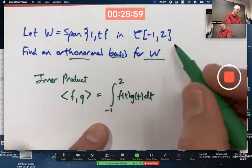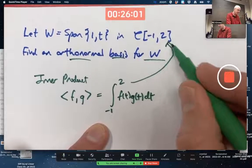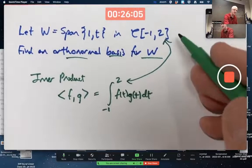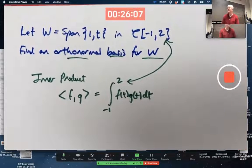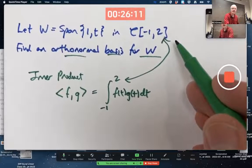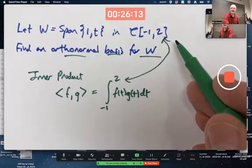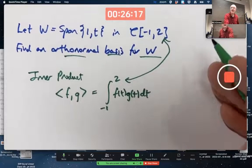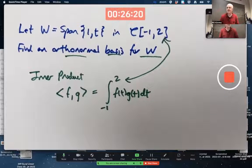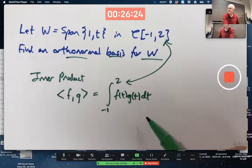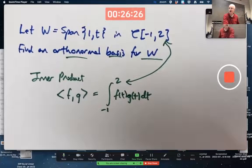So the negative one and the two come from the particular vector space that I'm considering. Why did I pick this vector space? Because I just felt like it. That's why. I could have picked any interval here from A to B, and then I'd integrate from A to B. It would be a different vector space. It would be a different inner product, but they're all very similar kinds of examples. The interval does affect what the answer is, because it affects this inner product.